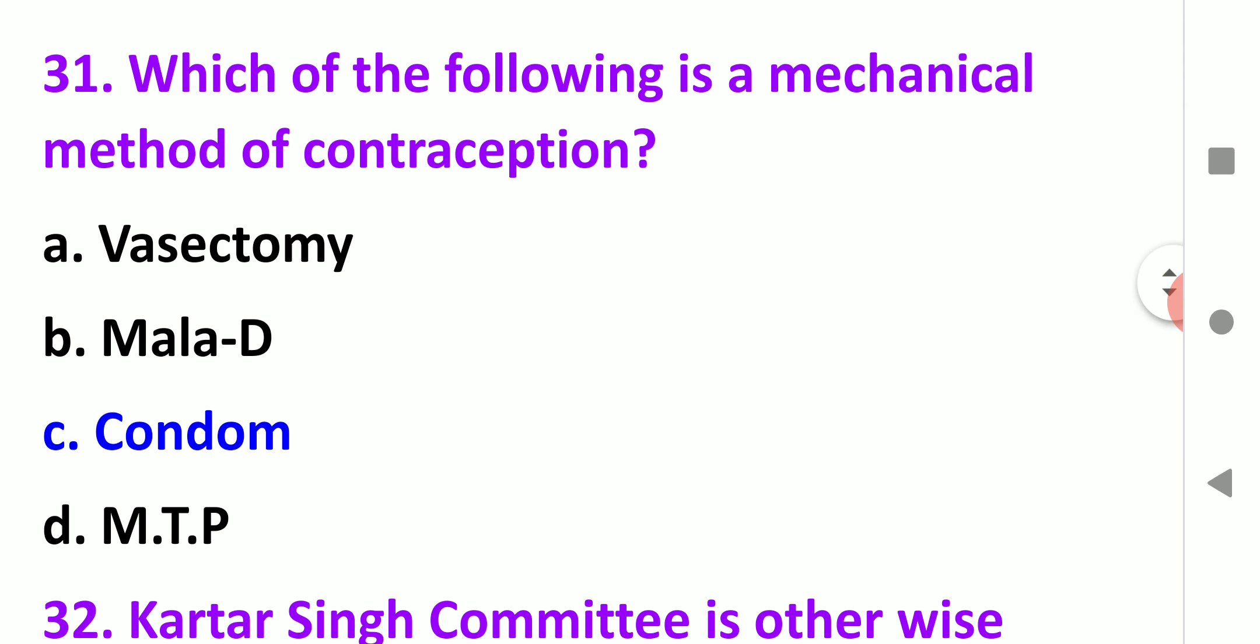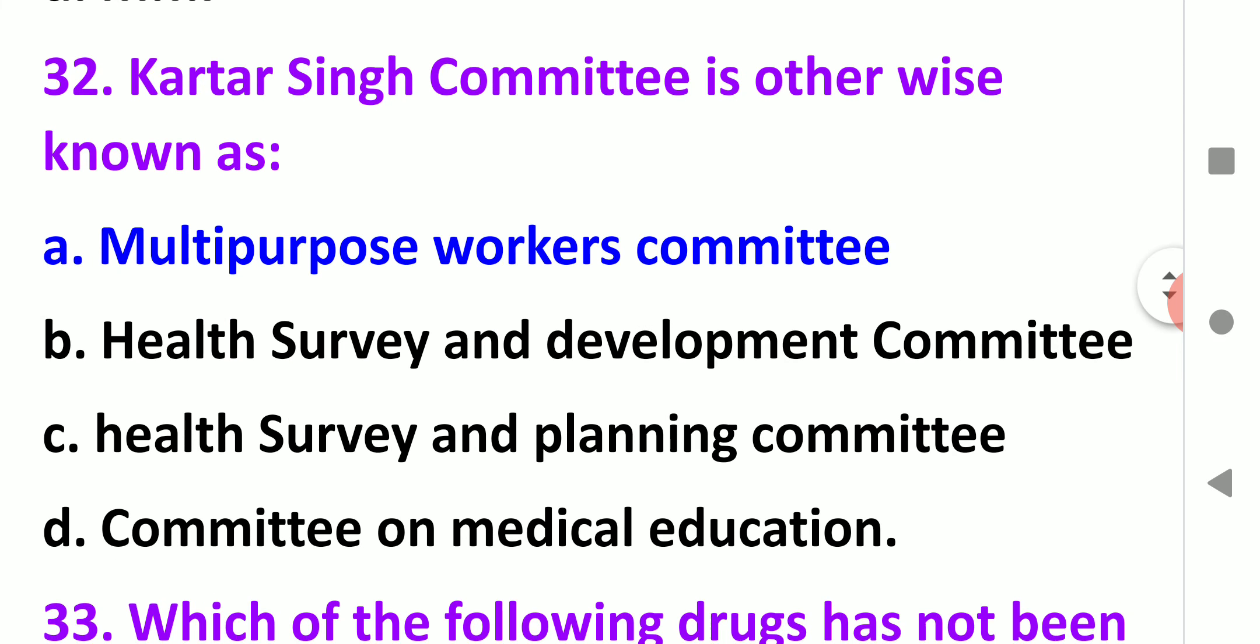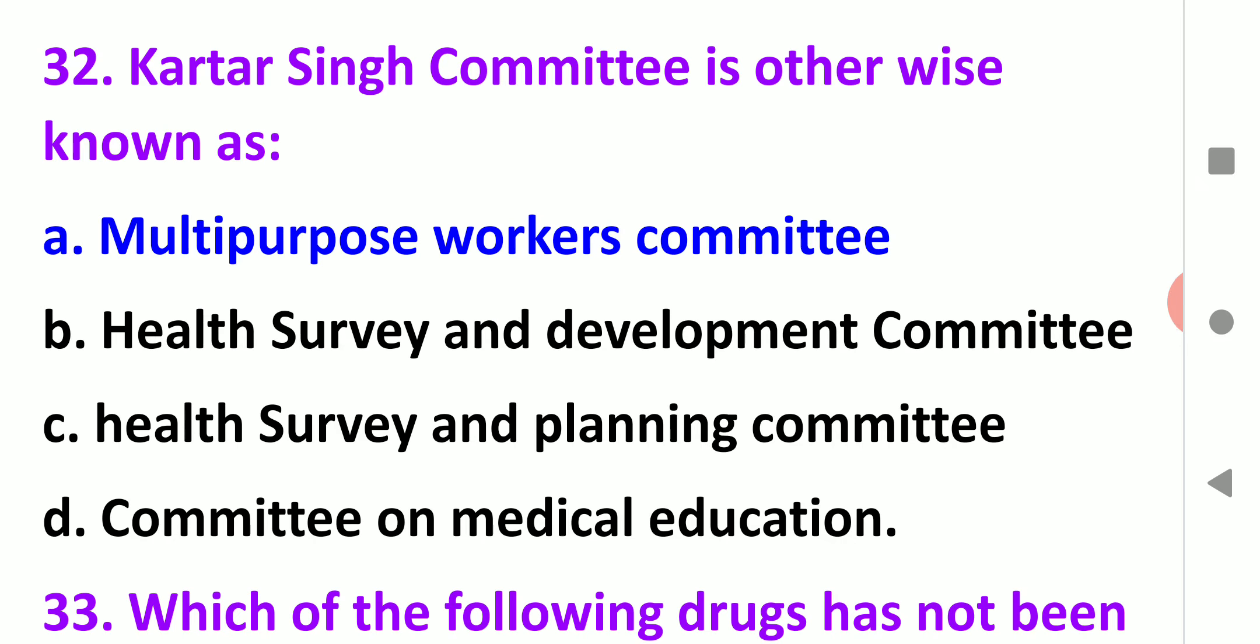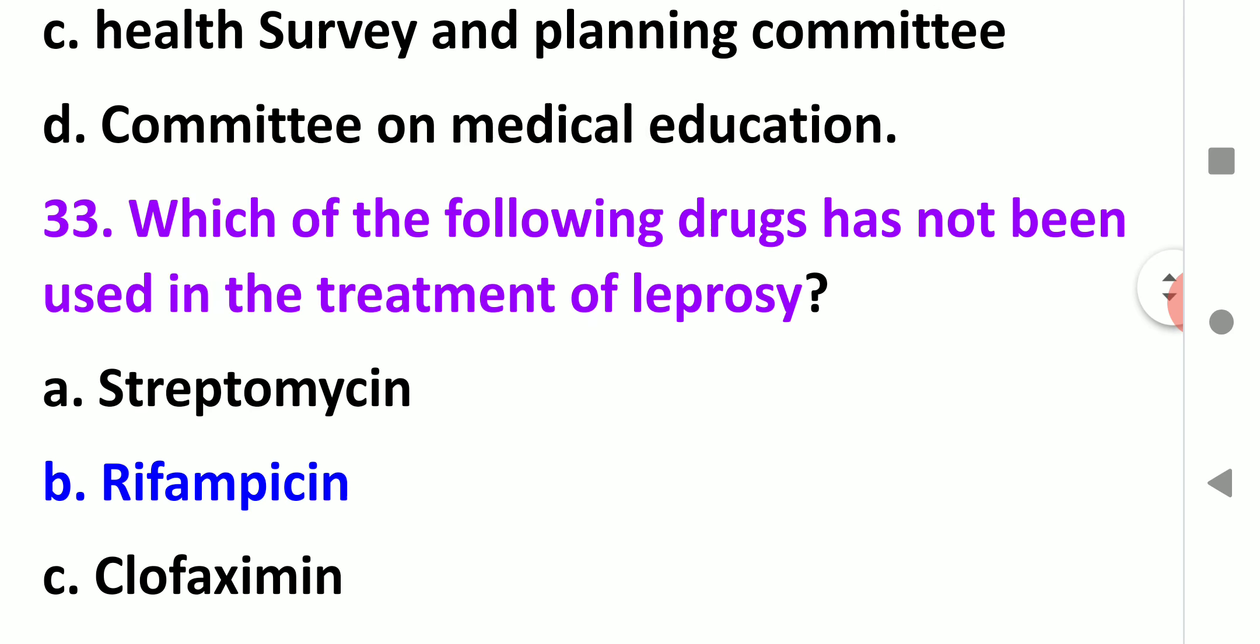Which of the following is a mechanical method of contraception? Mechanical method is a method which creates a barrier, such as condoms. Kartar Singh committee is otherwise known as the multi-purpose workers committee.